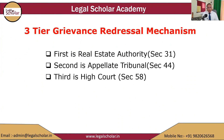When talking about the Adjudication Mechanism under RERA, there is a three-tier grievance system for redressal of grievances. Number one is the Real Estate Authority or Adjudicating Officer under Section 31 of RERA. Second is the Real Estate Appellate Tribunal under Section 44. And third is the High Court, where a second appeal can be filed.